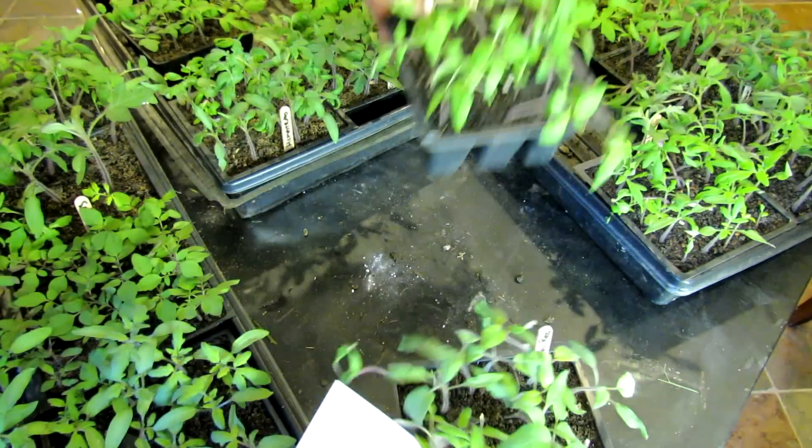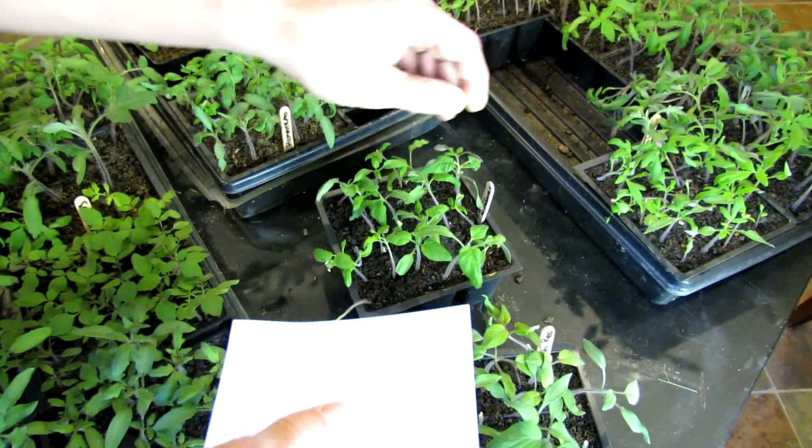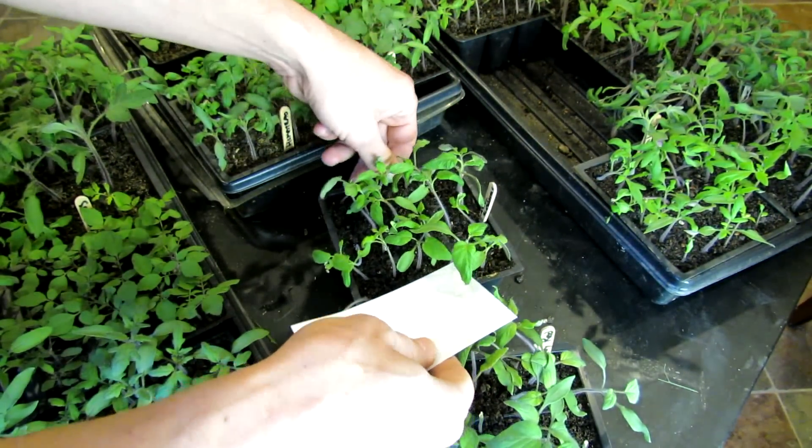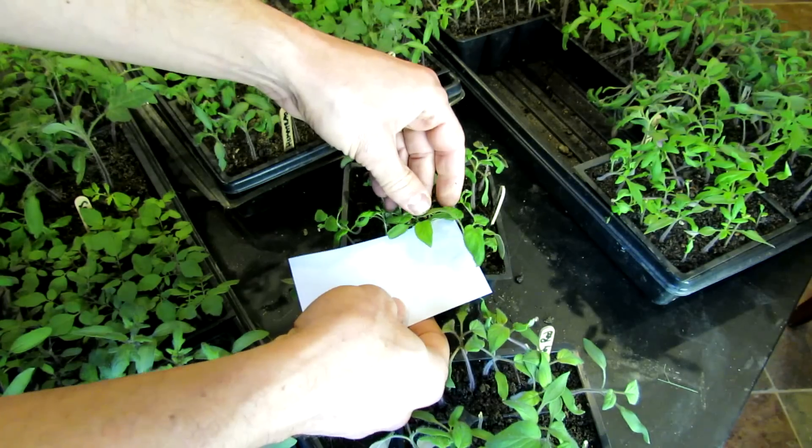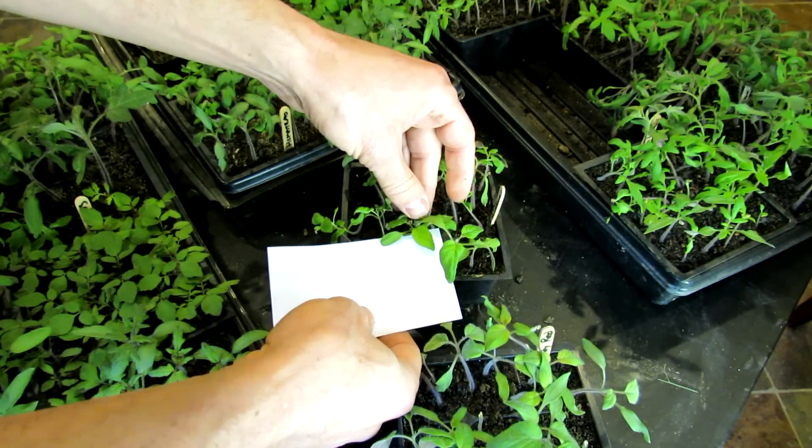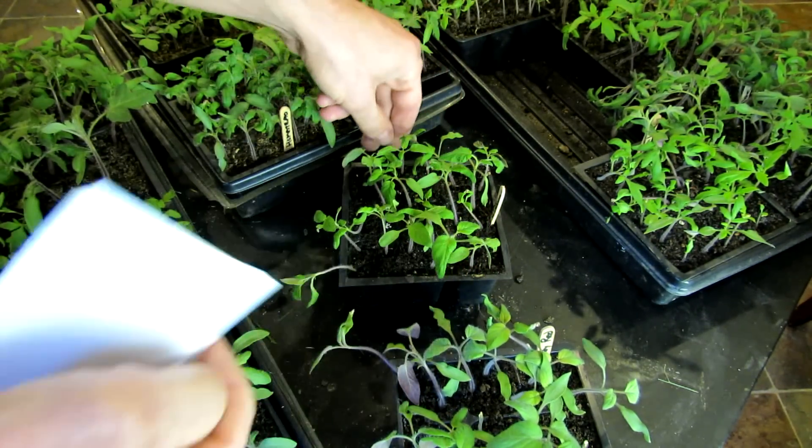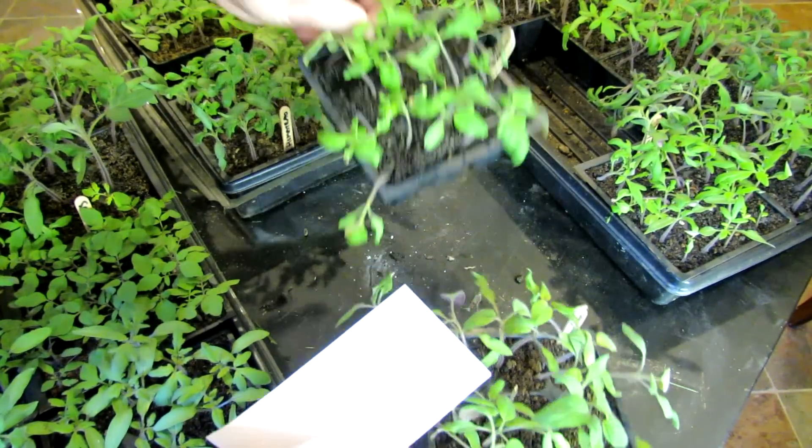And the final Brandywine I grow is the Sudduth strain, and you can see with that also, there's no scalloping on the leaf. And that's typically what they mean by a potato leaf tomato.